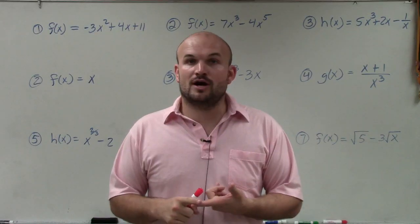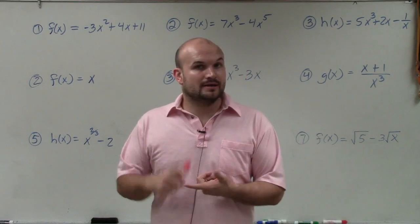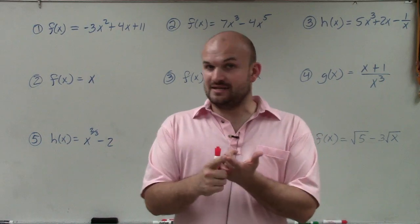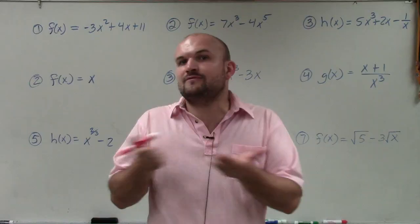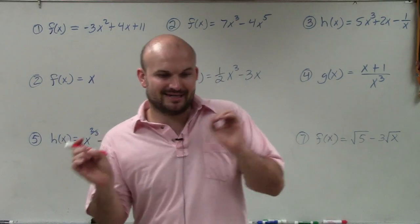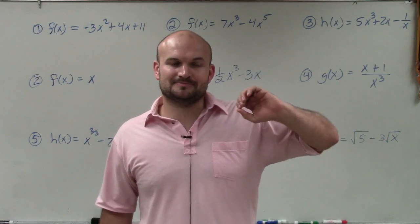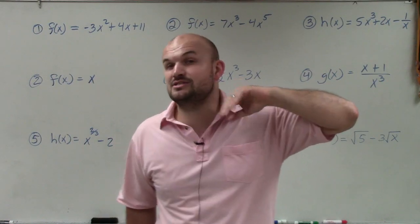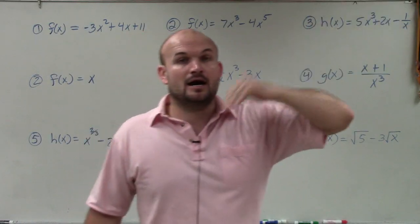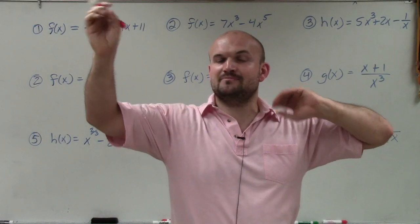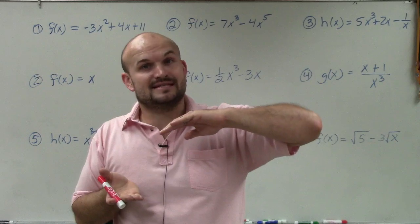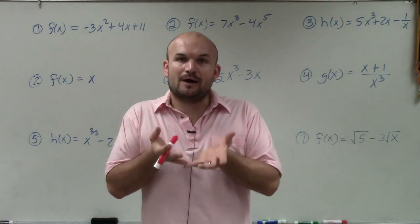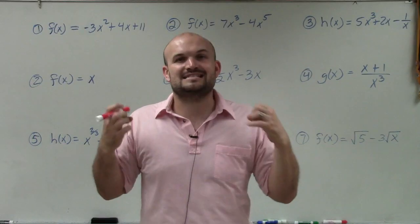We have to make sure that all of our variables have powers that are non-negative integers, meaning they have to be positive, they can't be negative, and they have to be integers. They can't be fractions. Remember, square roots and radicals can be rewritten as fractional exponents, so you can't include any variables under a root. Negative powers mean the variable can be rewritten in the denominator, so you cannot have any variables in the denominator. The overall definition is all the powers of the polynomial, every exponent, has to be non-negative integers.